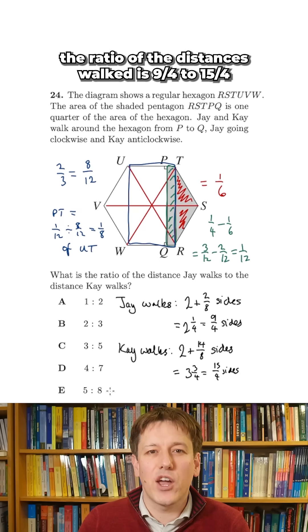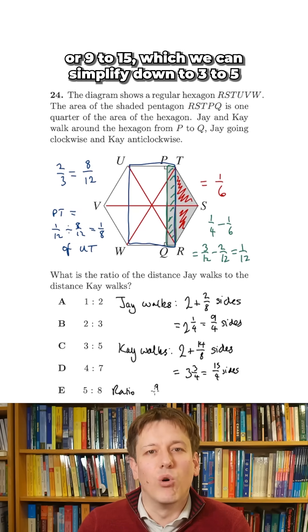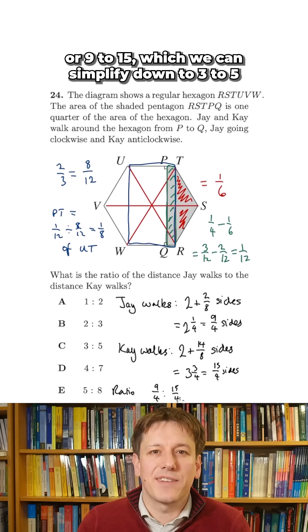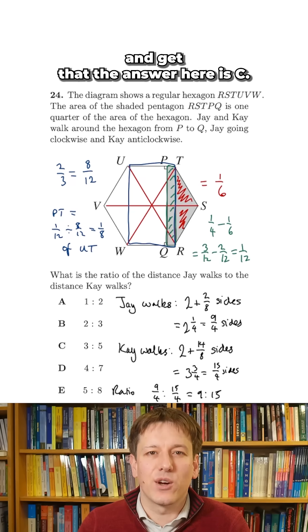So that means that the ratio of the distances walked is nine over four to fifteen over four, or nine to fifteen, which we can simplify down to three to five, and get that the answer here is C.